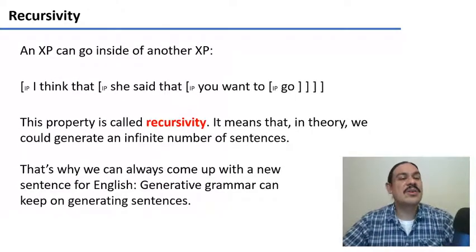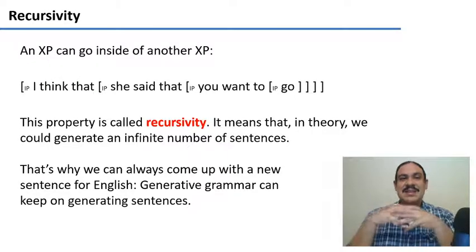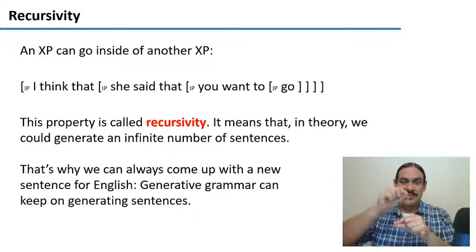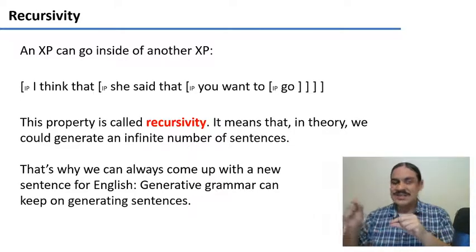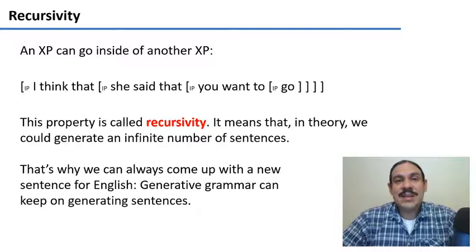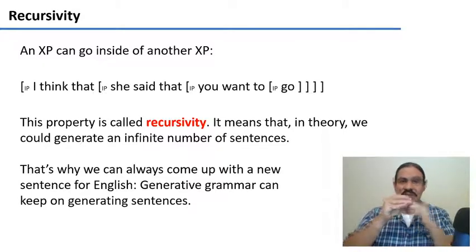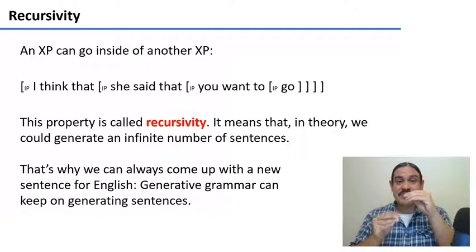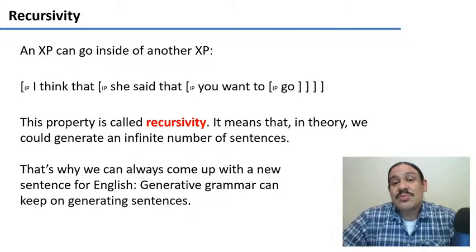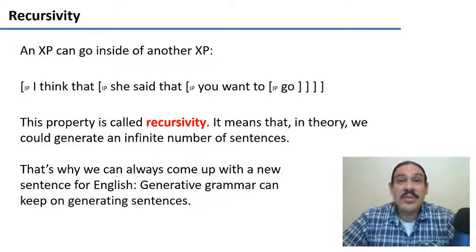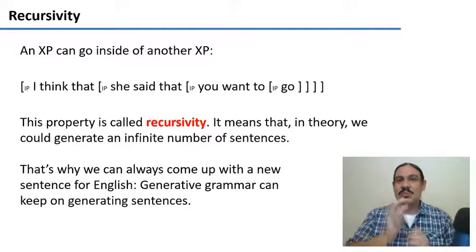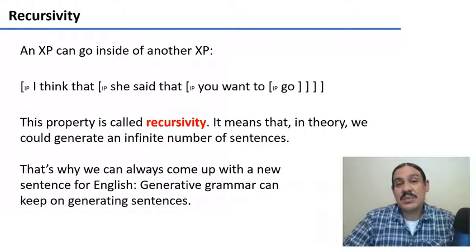Let's start with recursivity. You might have noticed that we have a verb phrase inside of an inflected phrase, and we have an adjective phrase inside a noun phrase, and so forth. In general, we can have XPs inside of XPs, so that we could keep building one structure inside of the other. This property is called recursivity, and in theory, we could keep putting one of these inside of the other infinitely, so that we could come up with an infinite number of sentences.